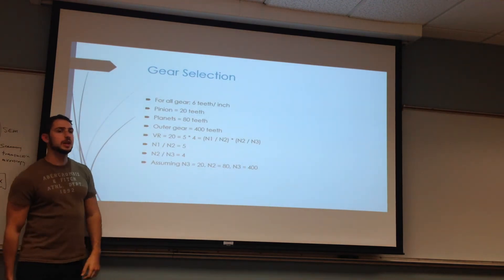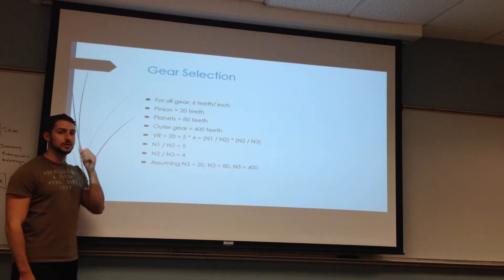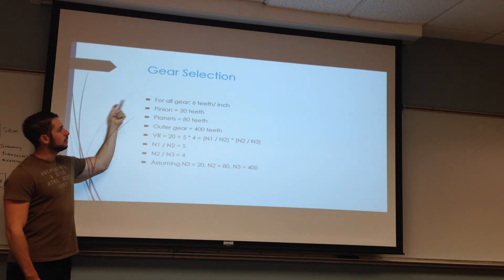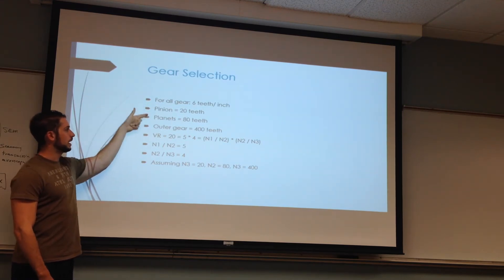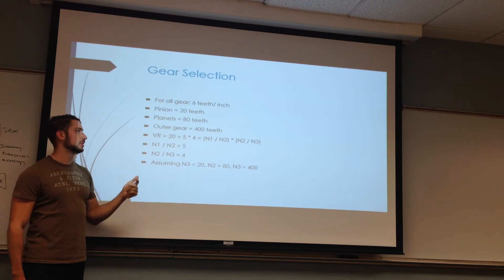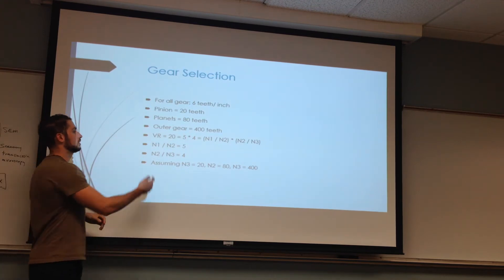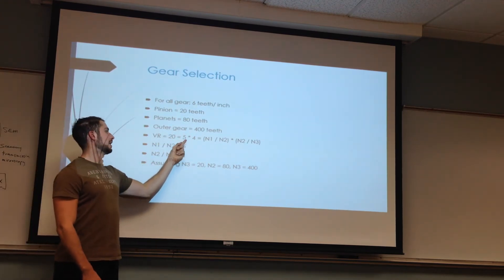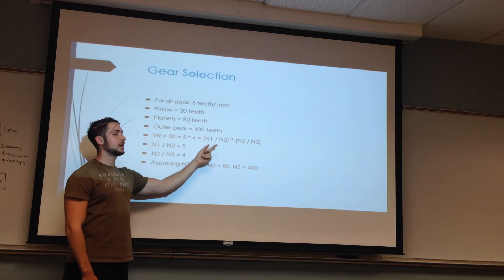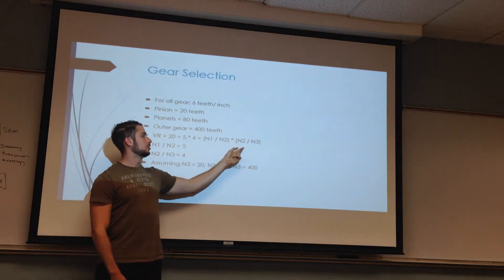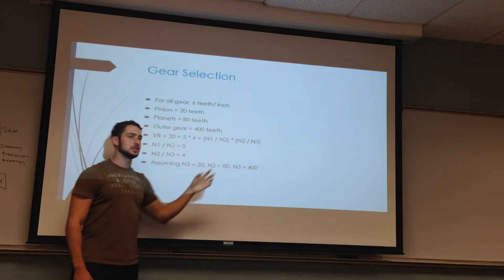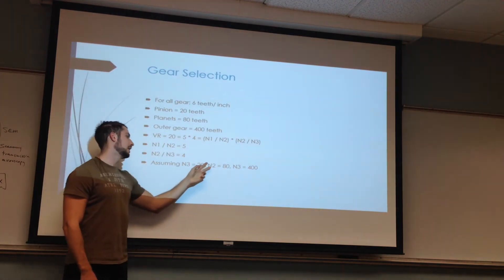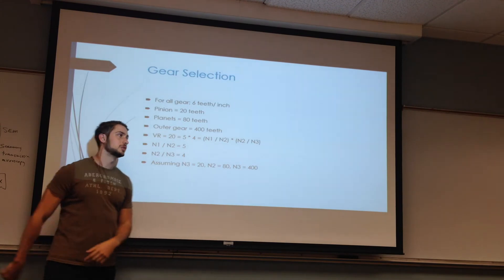Here is the gear selection. For all gears, we have 60 per inch diametral pitch. The pinion is going to have 20 teeth, planets 80, and the outer gear 400. These numbers were obtained by using the velocity ratio of 20. If we have 5 times 4 equals 20 — n1 divided by n2 times n2 by n3 gives us the ratio. We assume n1 to be 20, and from there we calculate n2 equals 80 and n3 equals 400.